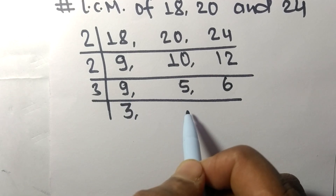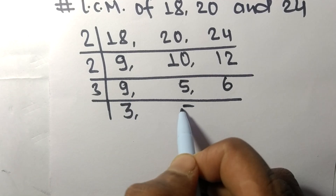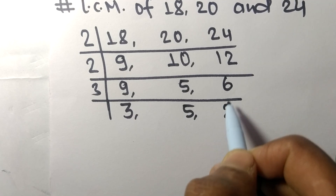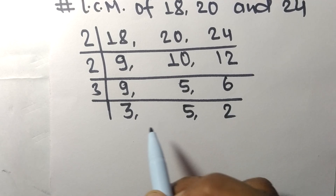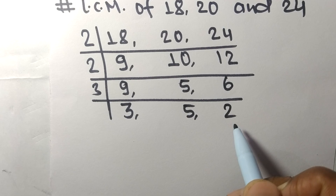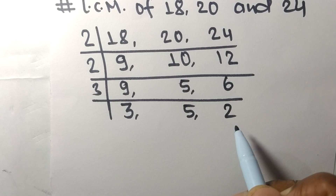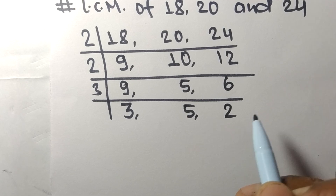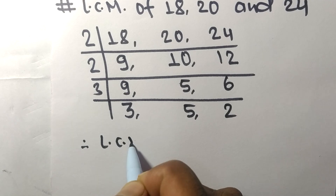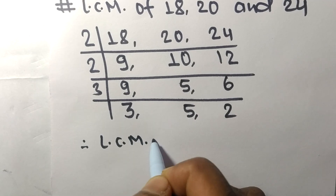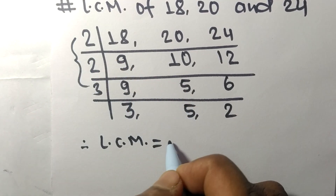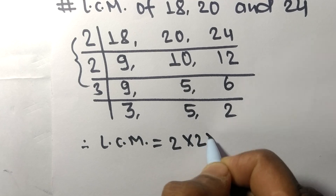5 is not divisible by 3, so it stays the same. 3 times 2 is 6. Now the remaining numbers 3, 5, and 2 are not divisible by the same number, so we compute the LCM.